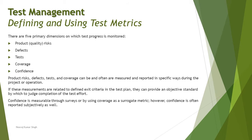If these measurements are related to defined exit criteria in the test plan, they can provide an objective standard by which to judge completion of the test effort. For example, exit criteria may include metrics such as number of test cases executed, number of defects resolved, and number of defects still open at priority one. These kinds of metrics can be part of your exit criteria and will add a lot of value when measured from time to time.